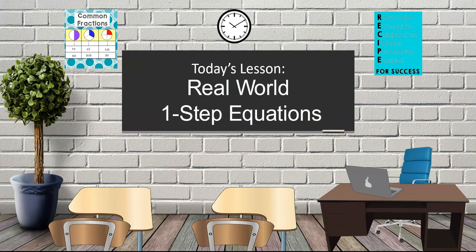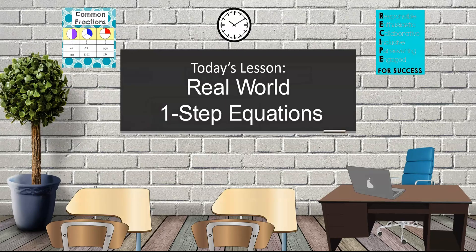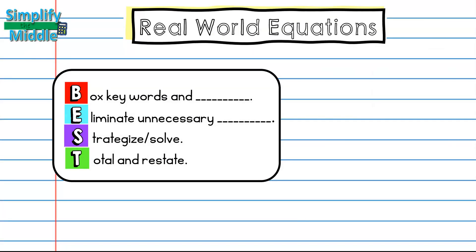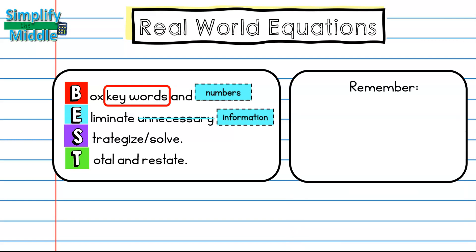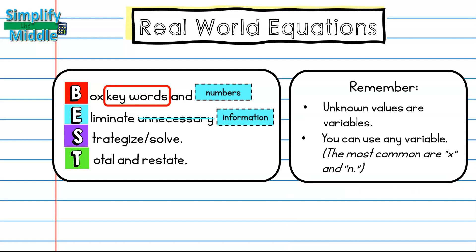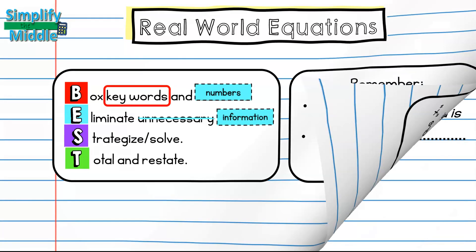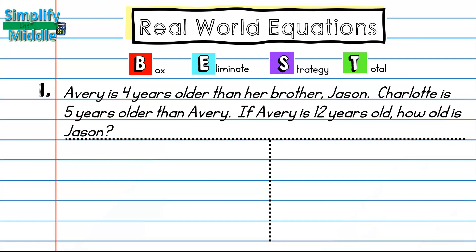Hi and welcome to today's lesson: real-world one-step equations. When we solve word problems, we're going to use something called the BEST method, where we Box keywords and numbers, Eliminate unnecessary information, Strategize and Solve, and Total and Restate. It's important to remember that unknown values are variables, and you can use any letter for a variable.